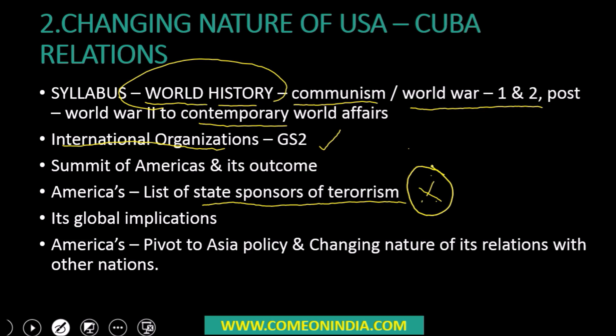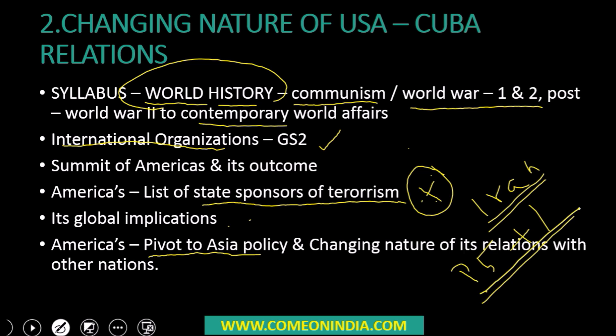This is an important step in normalizing relations between the USA and Cuba. This topic is not important for prelims but is important for Mains 2015. America has a policy of rebalancing Asia, or pivot to Asia, and recently it almost normalized relations with Iran by signing a nuclear agreement — the P5+1 deal — which is also an important topic for prelims and mains. You should know the outcome of Iran's nuclear agreement with the P5+1 countries, and what the pivot to Asia policy is and its implications for India.